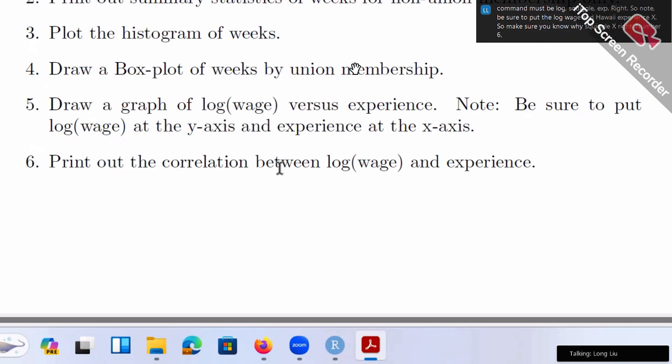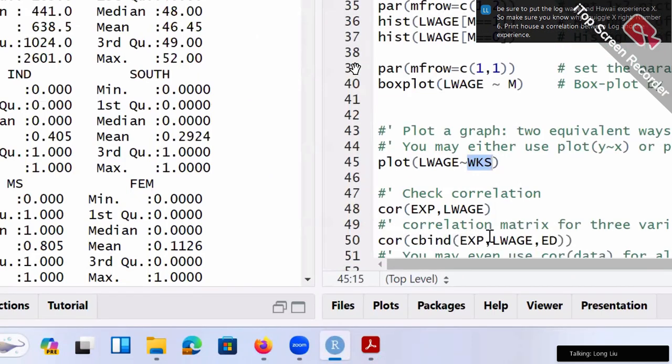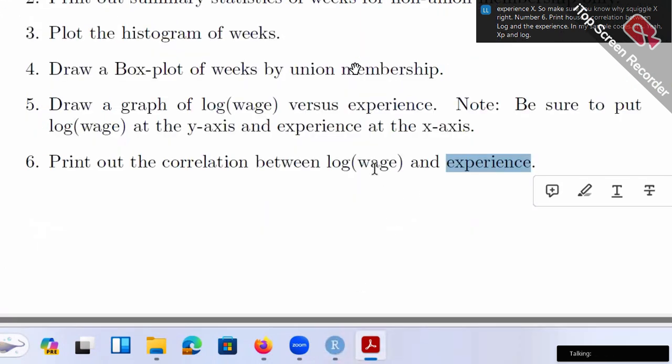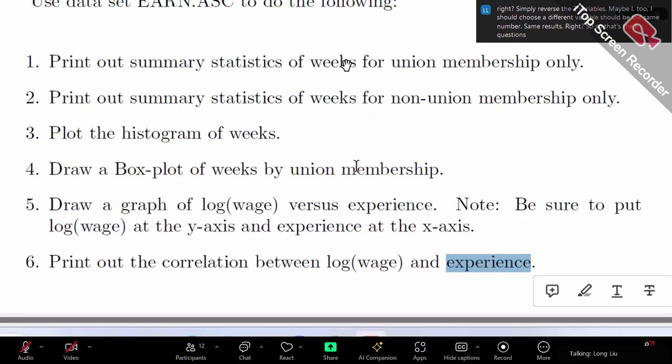Number six, print out the correlation between log wage and experience. In my sample codes, it's exp and log wage. In your one, basically log wage and the experience. Simply reverse the two variables. Maybe I'm too nice to you. I should choose a different variable. Anyway, this one switch the two variations. Should it be the same numbers, same result. So that's the six questions for you.